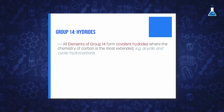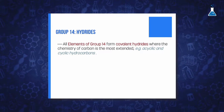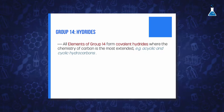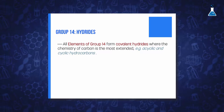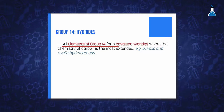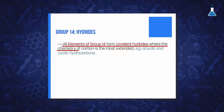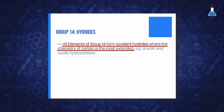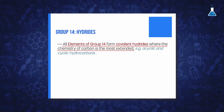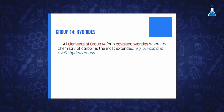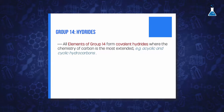All the group 14 elements form simple binary compounds with other elements such as hydrogen, oxygen, or halogens. With respect to the combination with hydrogen, all elements form covalent hydrides, where the chemistry of carbon is the most extensive, with a huge family of acyclic and cyclic hydrocarbons.